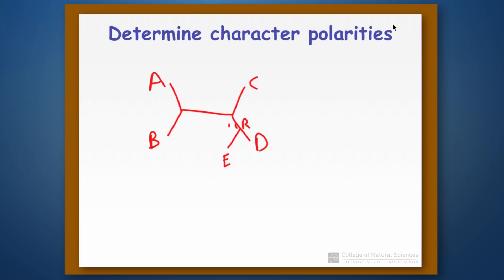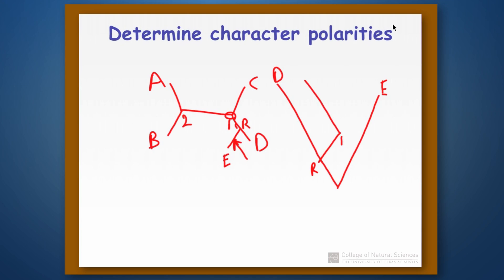If E is the outgroup, we break the branch at the appropriate location, which becomes our root. The root connects up to species D and to node one. Node one goes up to species C and out to node two, and node two goes to species A and B — giving us our rooted tree. With molecular data, the only way to get the root on the tree is outgroup comparison like this.